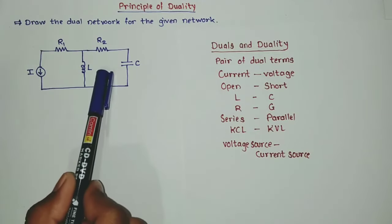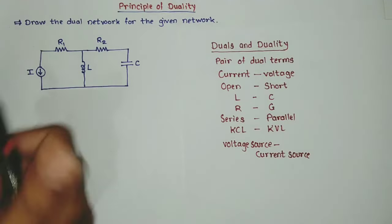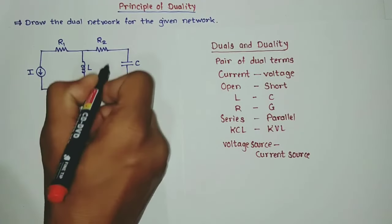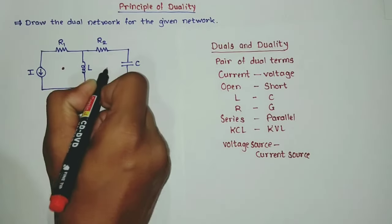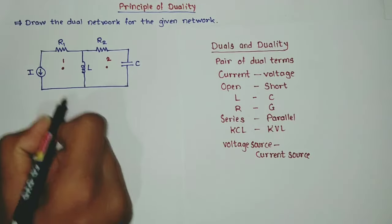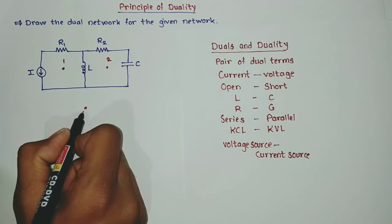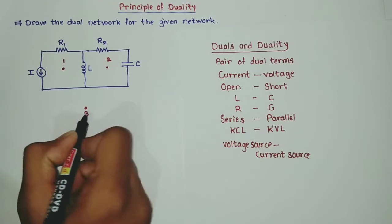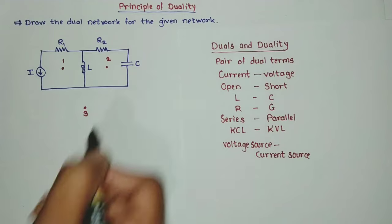We can use these duals in the solution of our network. For the duality, first we have to mark the nodes in our meshes. We are having two meshes, so we will put two nodes in our meshes. One node should be considered outside the network — let us consider this the third one, and this is generally a reference node. You can put zero or three here, but I am using the number three.